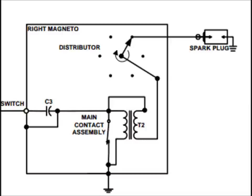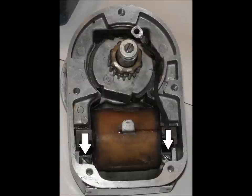The operation of the magneto starts with the creation of an AC current. The current is created by turning a high strength permanent magnet on the rotor in close proximity to the magneto coil.